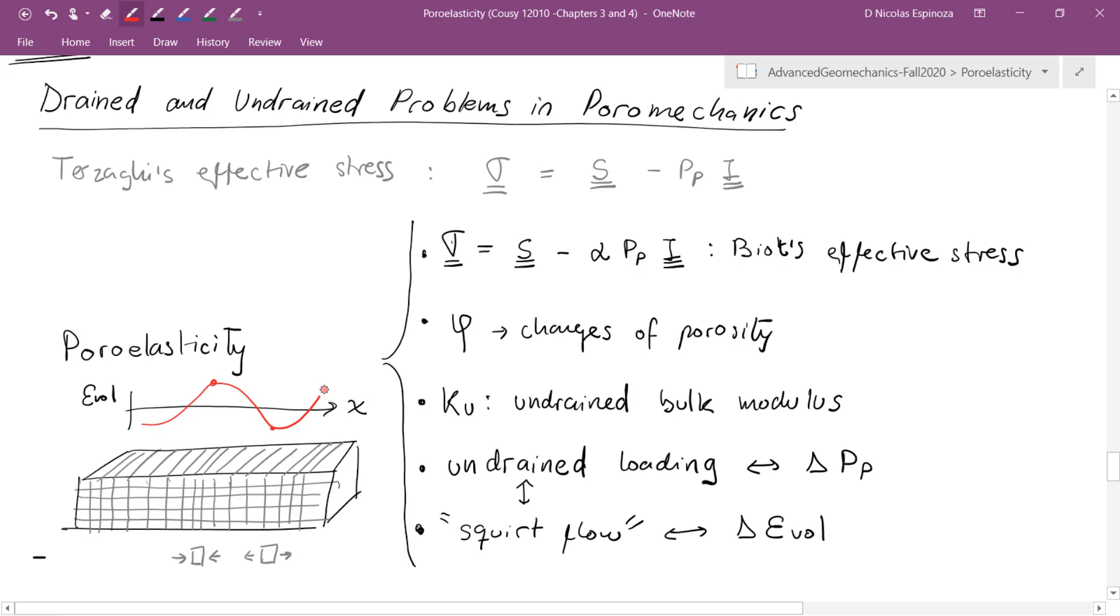So this would be our wave. And of course this would be our wavelength. And the squirt flow as we say is going to develop from regions of compression to regions of extension. All of that can be explained through the theory of poroelasticity.